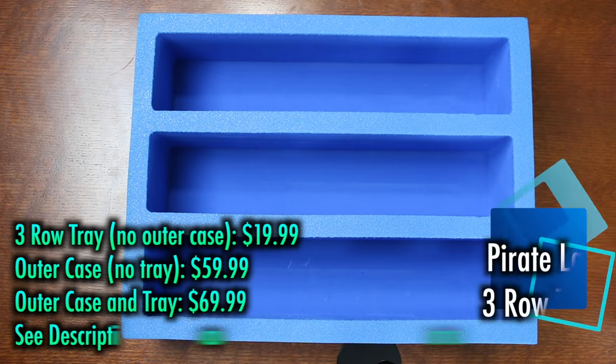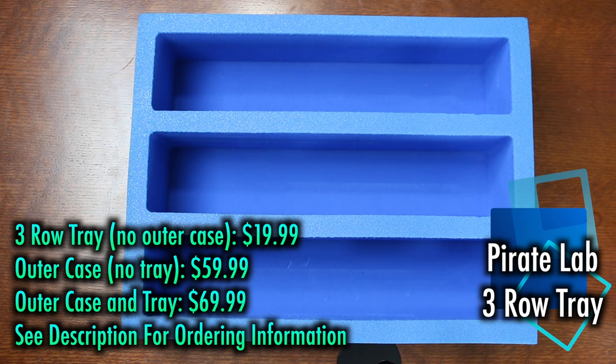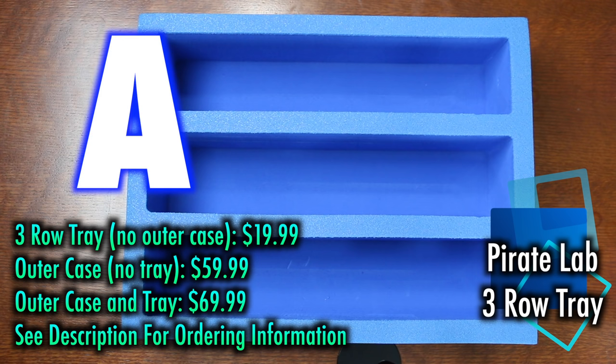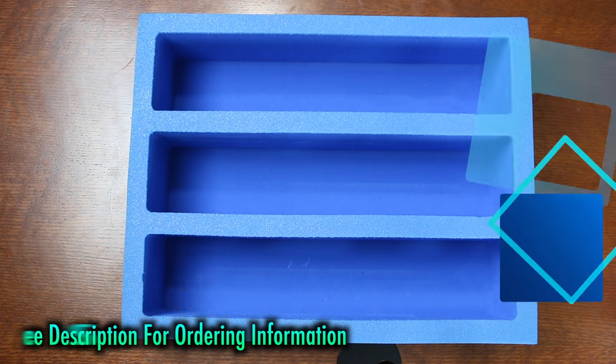So, what's the cost? The three-row max capacity tray sells for $19.99. Now, remember that does not include the outer case, which of course costs $59.99 by itself, or a nice deal of $69.99 if you'd like the foam insert of your choice included. Grade, this is a solid A, ideal for home storage or transport. I really like what Pirate Lab is producing here.